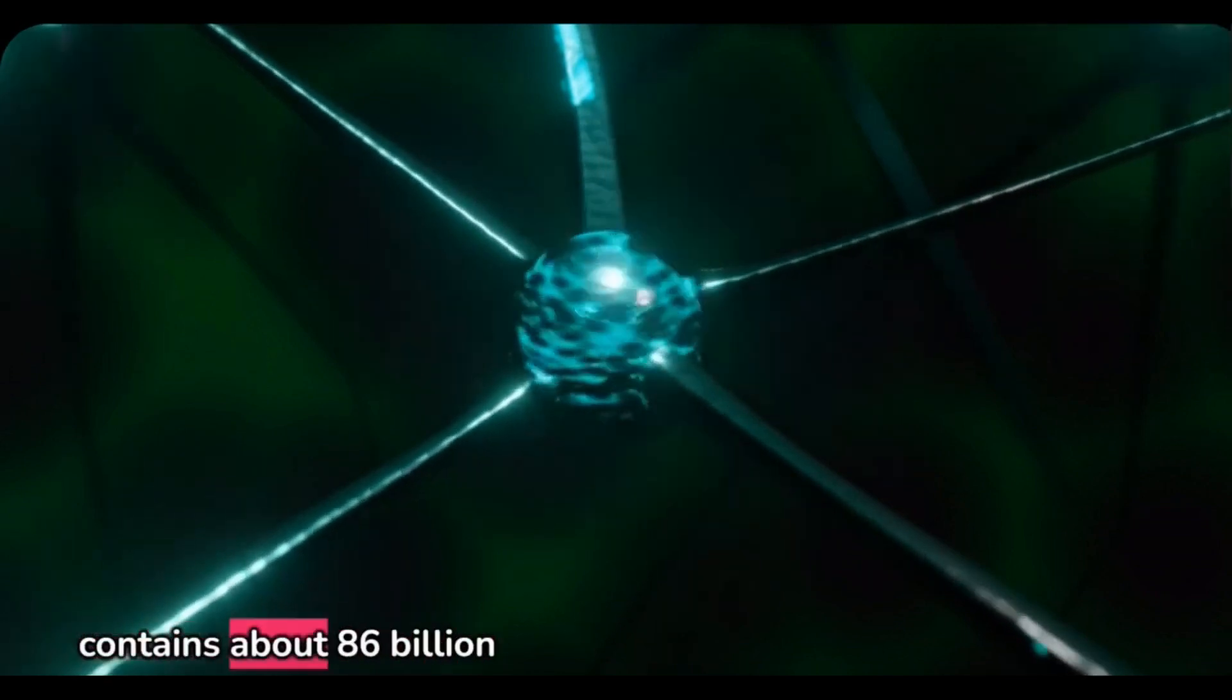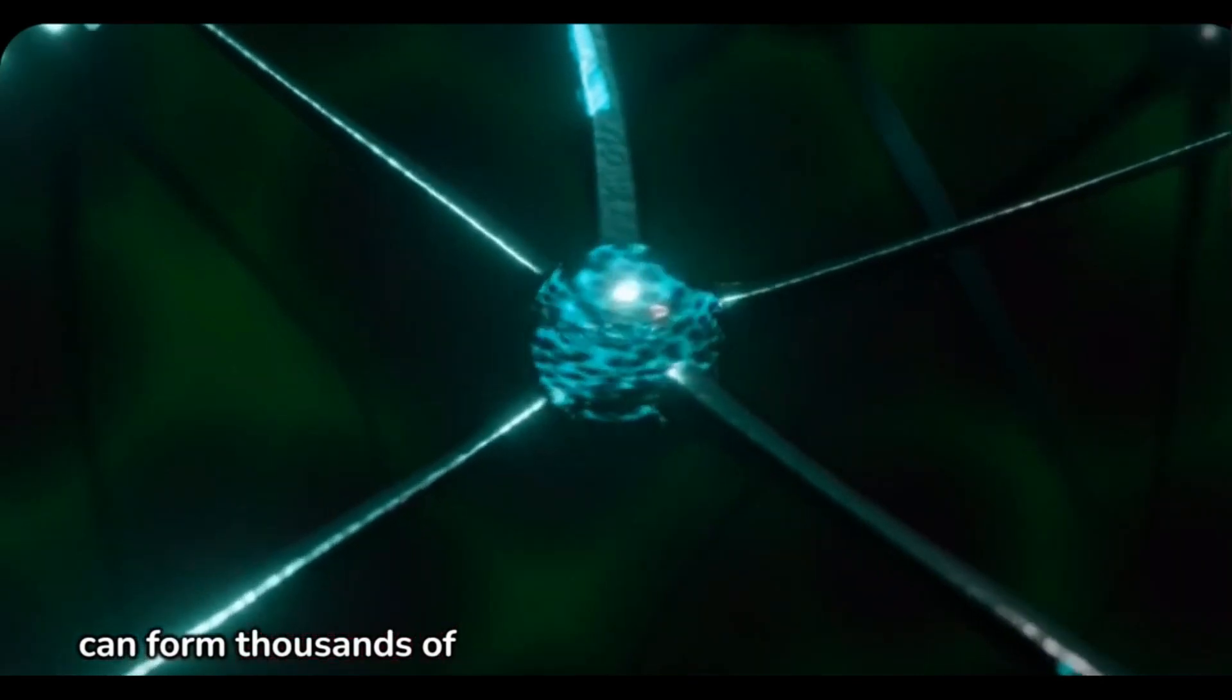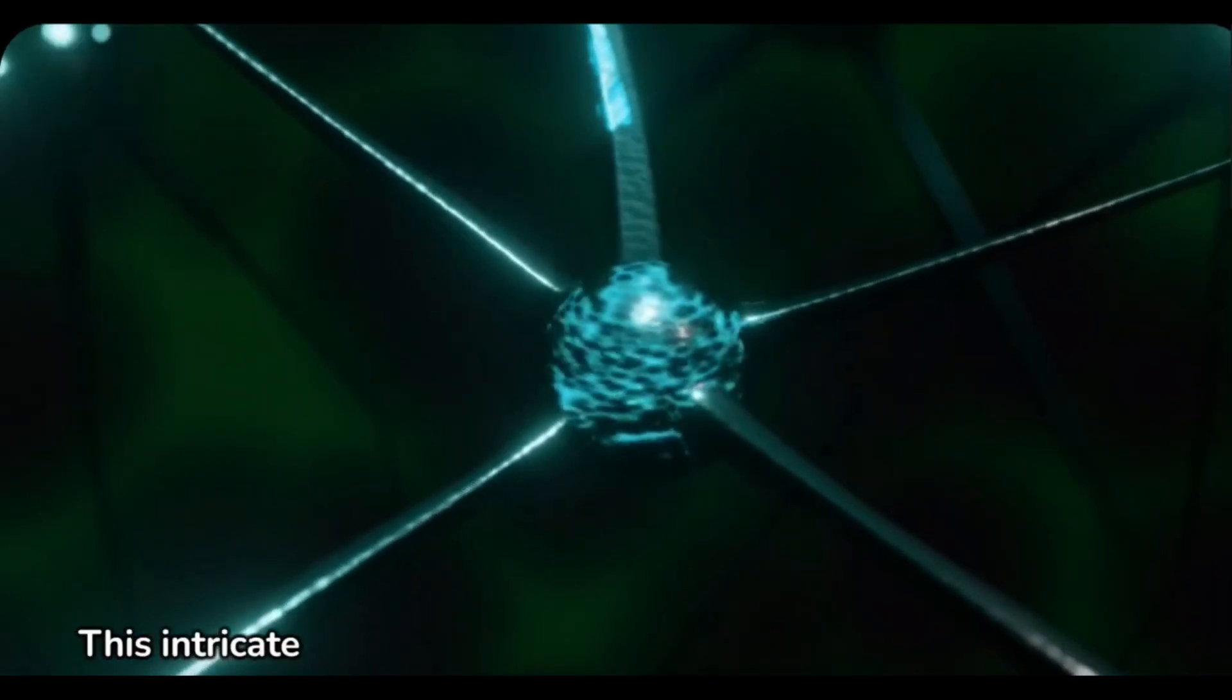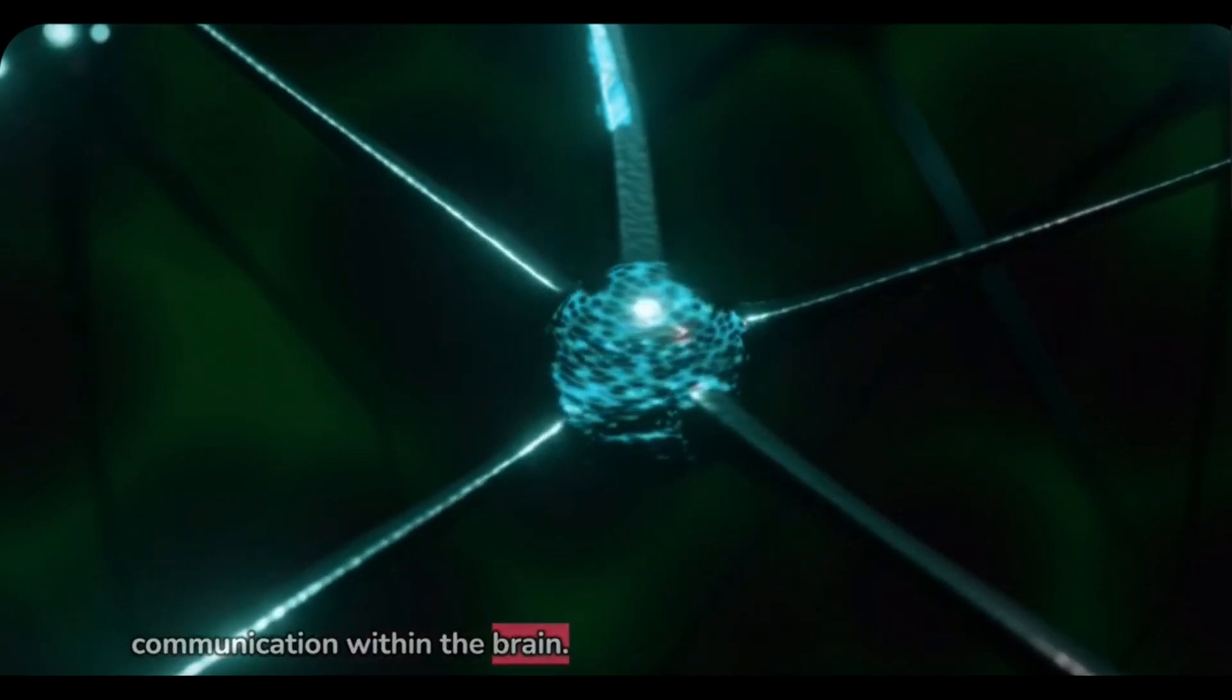The adult human brain contains about 86 billion neurons, and each neuron can form thousands of connections called synapses. This intricate network allows for complex communication within the brain.